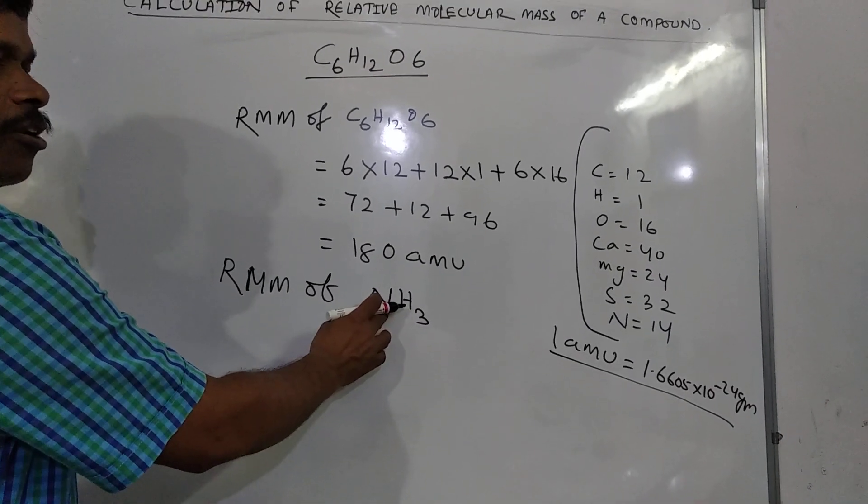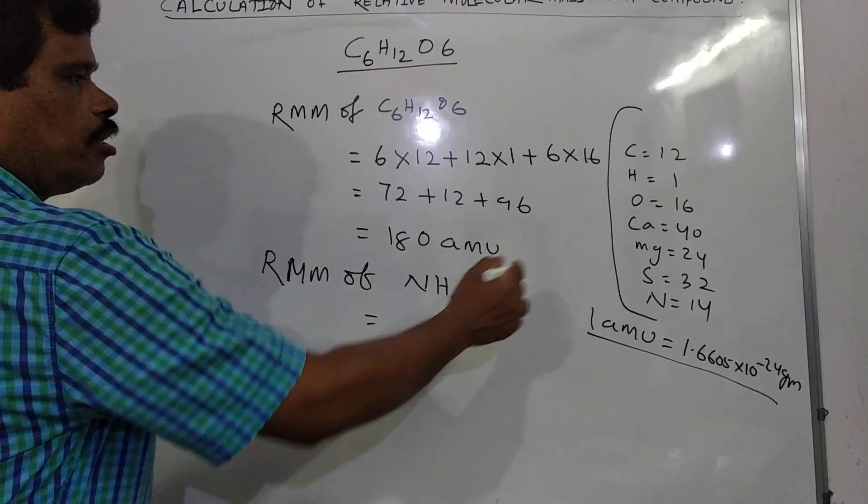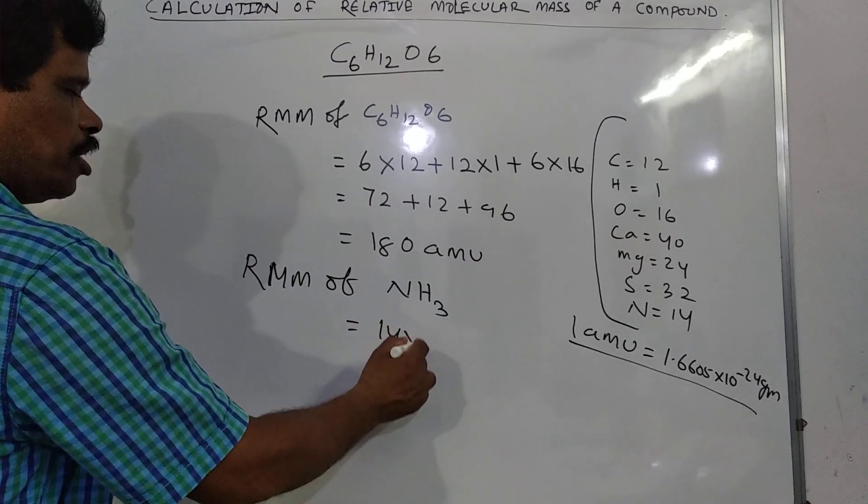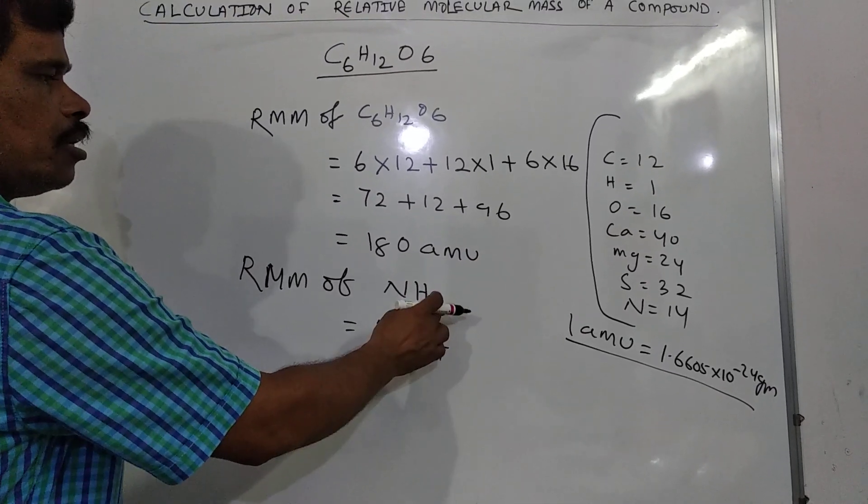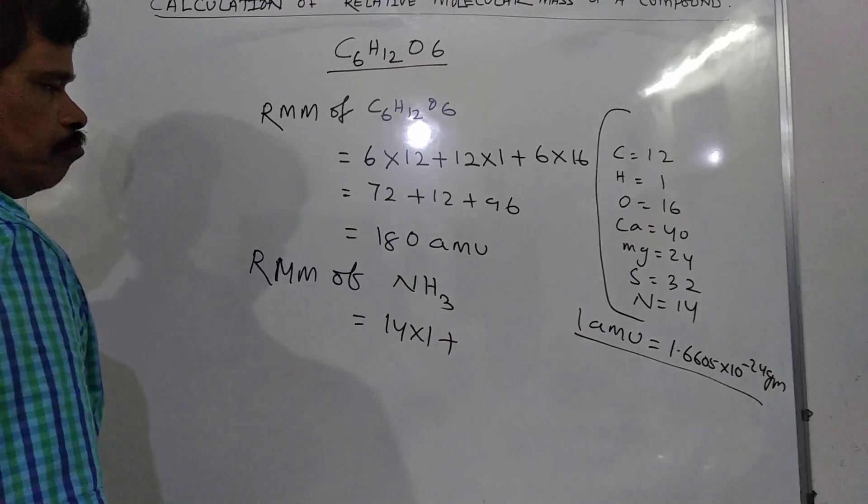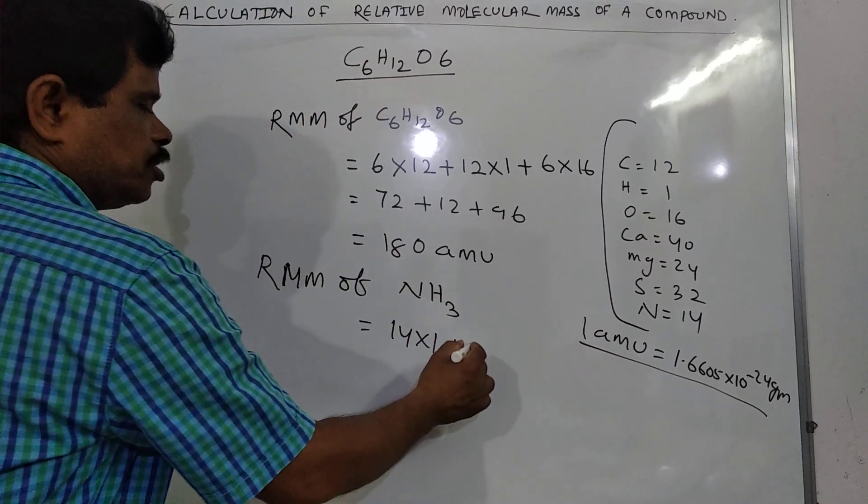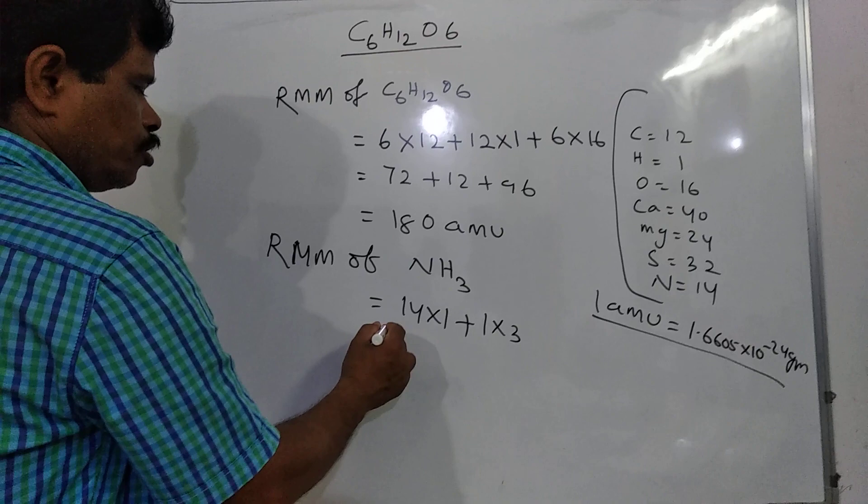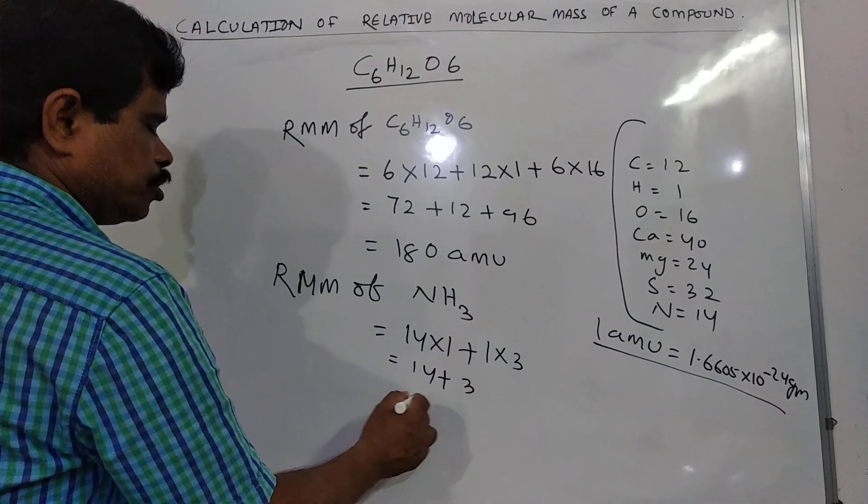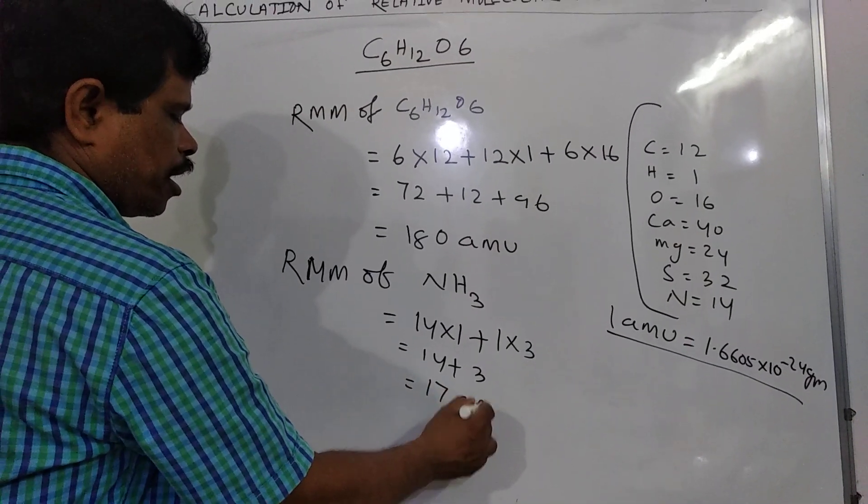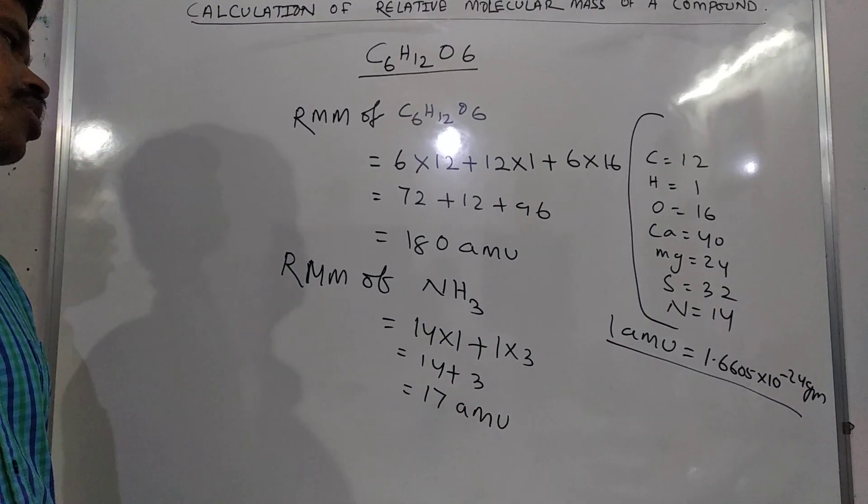Ammonia, 1 nitrogen atom. So nitrogen, your atomic mass is 14 into 1, plus 3 hydrogen atoms. So hydrogen atomic mass is 1, 1 into 3, which is equal to 14 plus 3, which is equal to 17 amu, atomic mass unit.